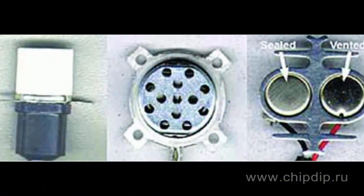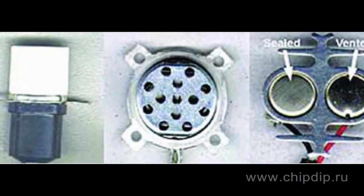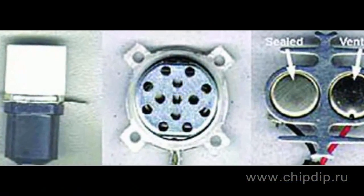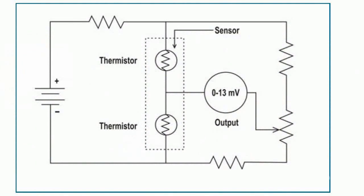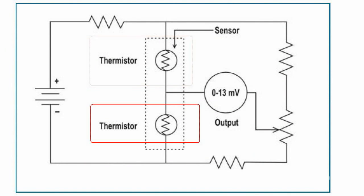Thermal humidity sensors consist of two thermistors with a negative temperature coefficient which are included into a bridge circuit. One of them is in a sealed glass casing inside of which there is nitrogen, while the second sensor is open to the effects of the ambient conditions.